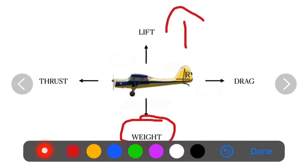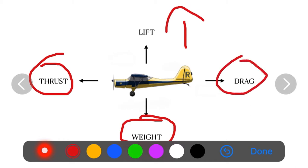The third force is thrust, which we get from the engines. This propels the airplane forward through the air. Working opposite to thrust, we have drag or resistance, where the friction of air passing over the airplane tries to slow it down. All these forces need to be balanced to sustain level flight.